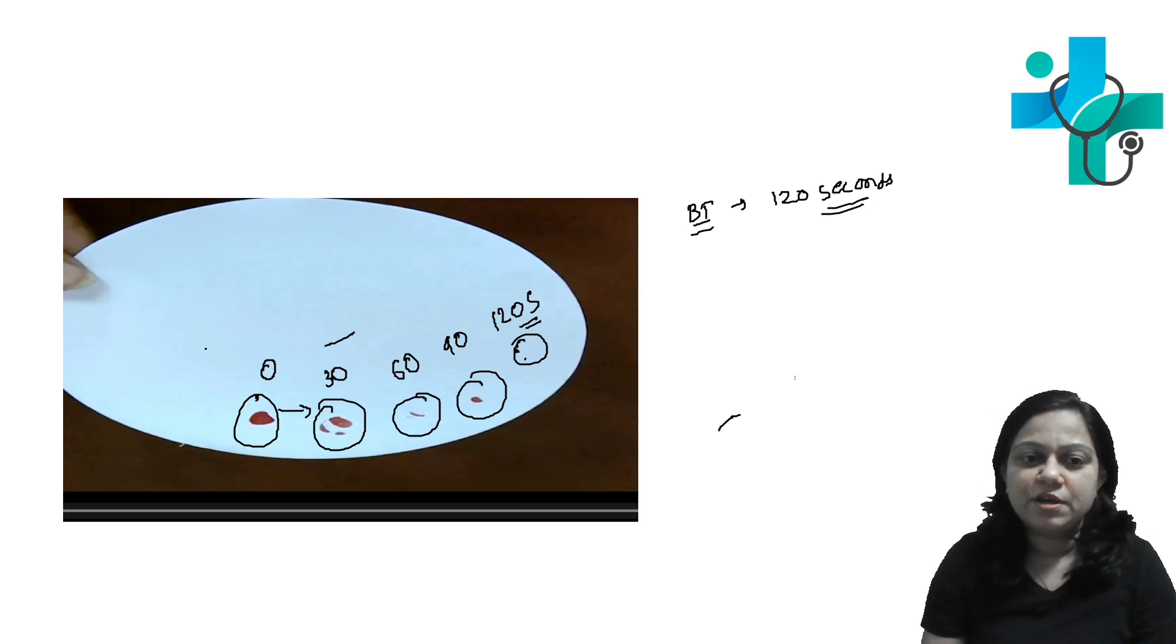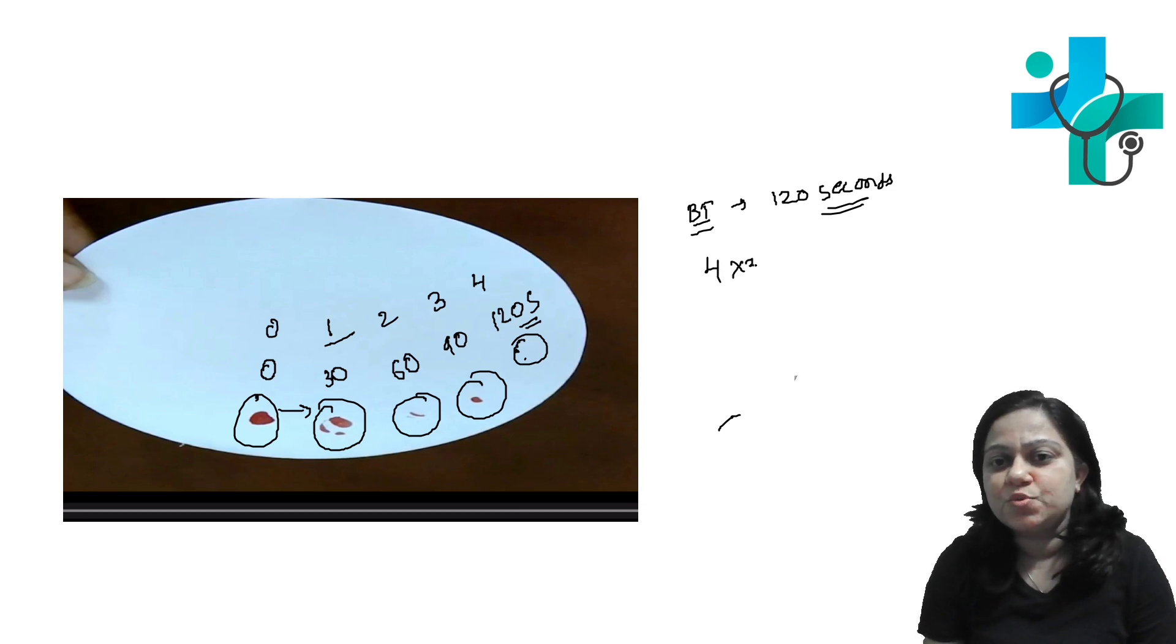You can also count the drops. Start counting from zero: zero, one, two, three, and four. Multiply it by 30, so it is 120 seconds.